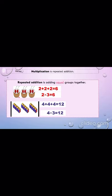Here, we are having three baskets and each basket consists of two cherries. So we can write it as 2 plus 2 plus 2, which equals to 6. In other words, we can also say that we have three sets of two cherries, so we can also write it as 2 multiplied by 3, which equals to 6.